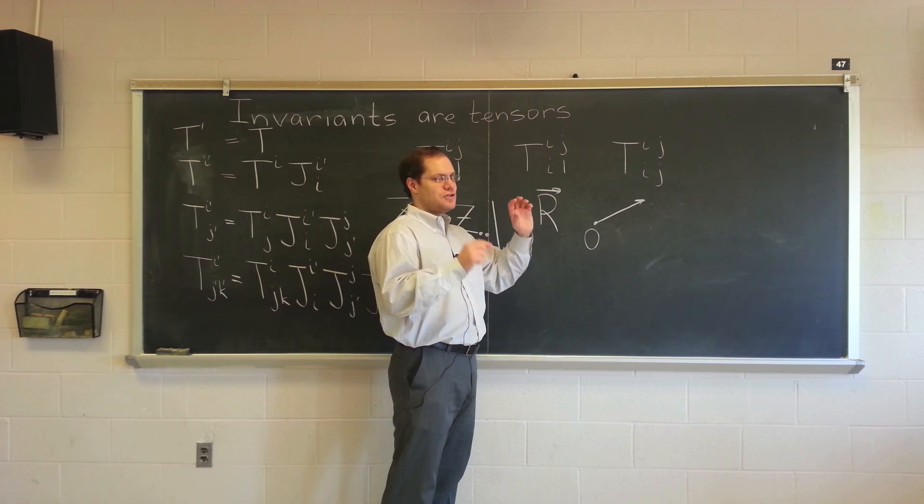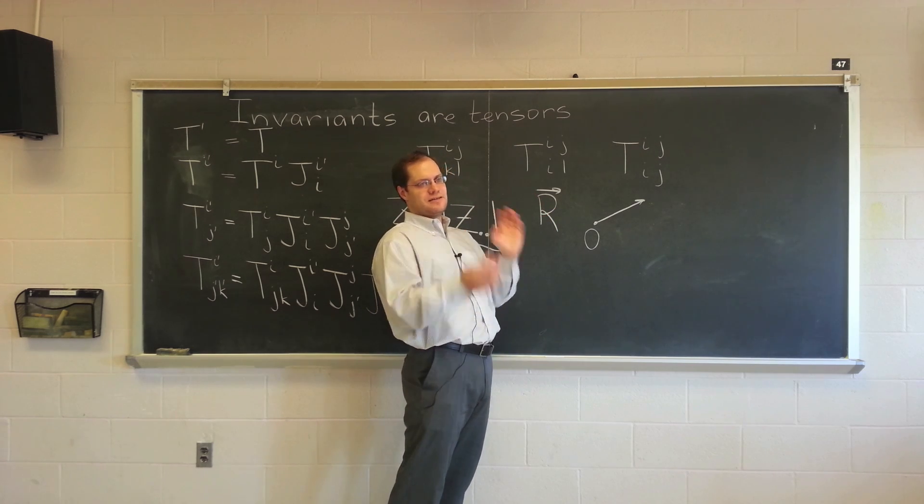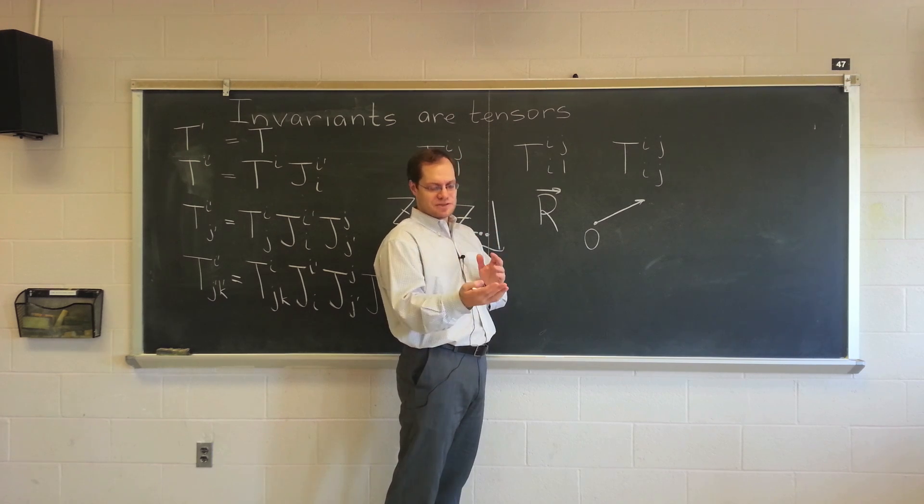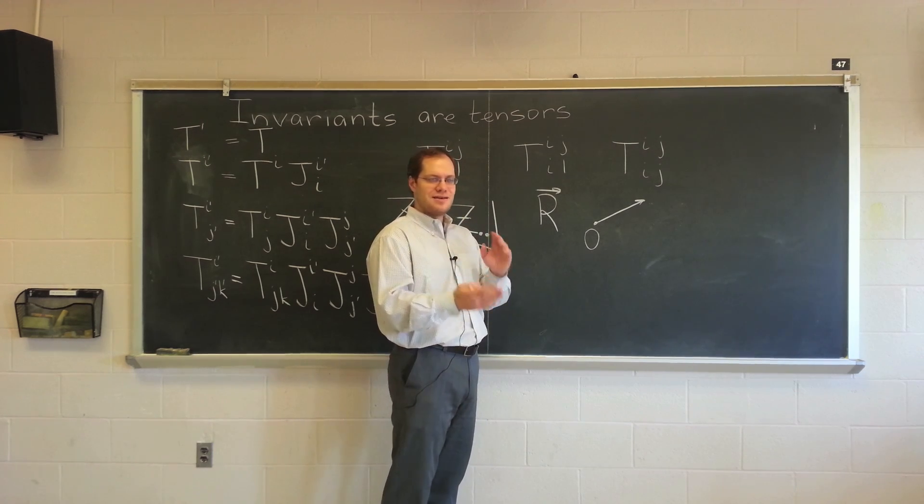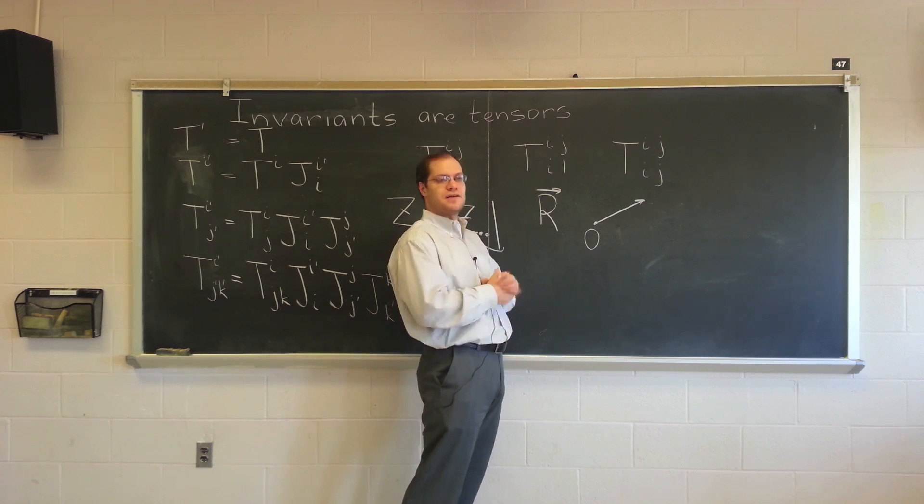It's actually backwards. It's not that you take a contravariant tensor and the covariant basis, you put them together, and you get the invariant velocity field. It's you start with the velocity field, you decompose it with respect to the covariant basis, and that's how you get the contravariant coordinates. So you can start with invariants.